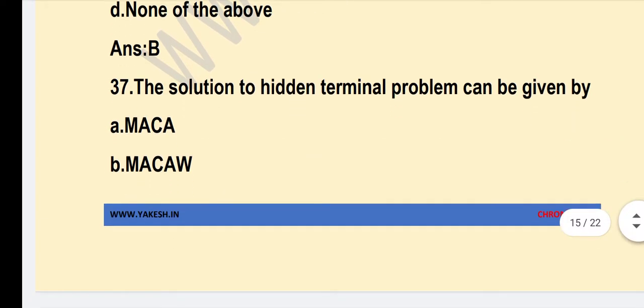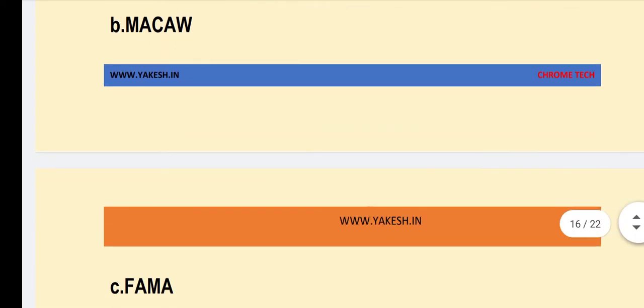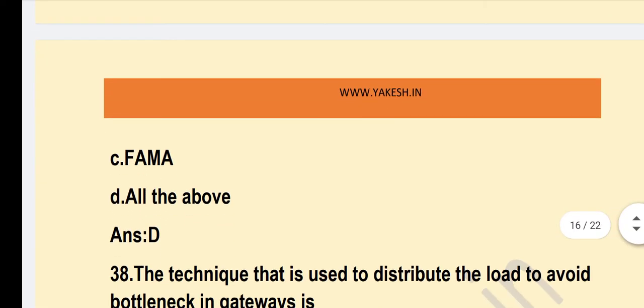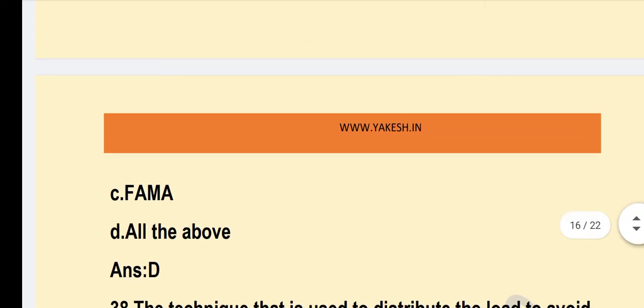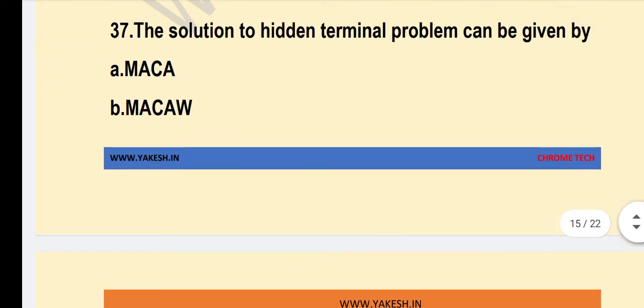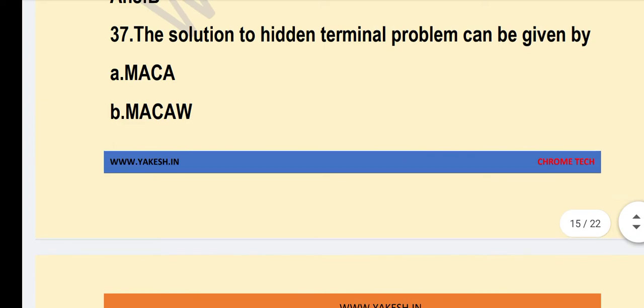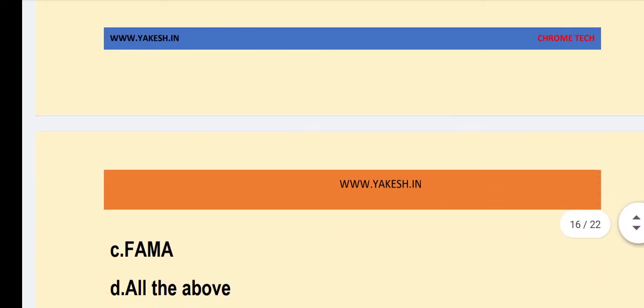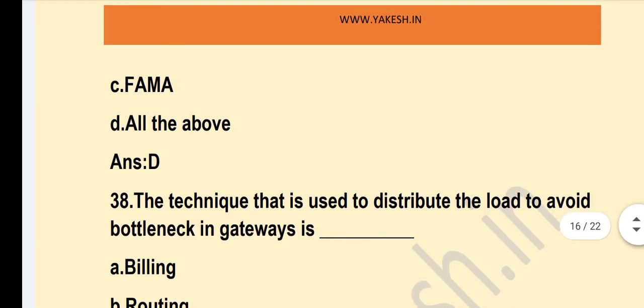The solution to the hidden terminal problem can be given by? Option D — all of the above: MACA, MACAW, and FAMA.